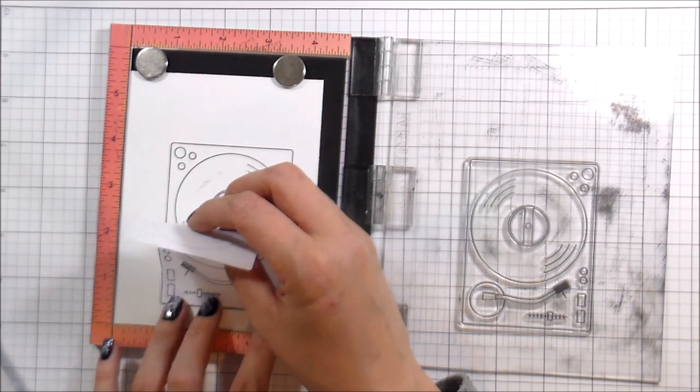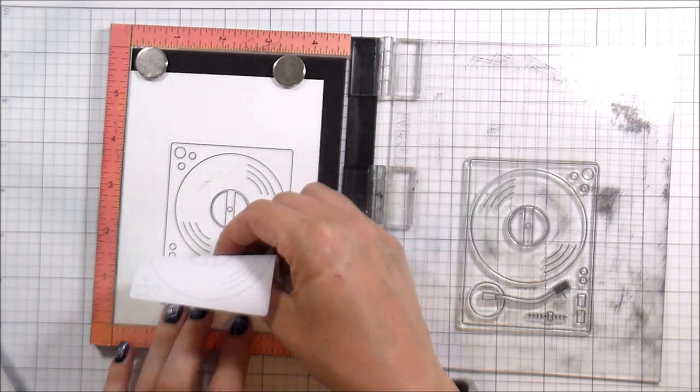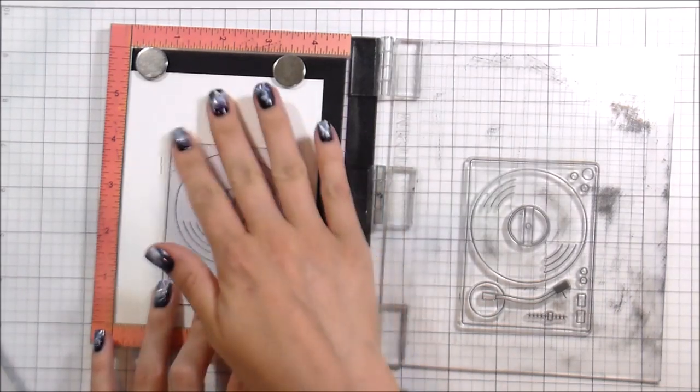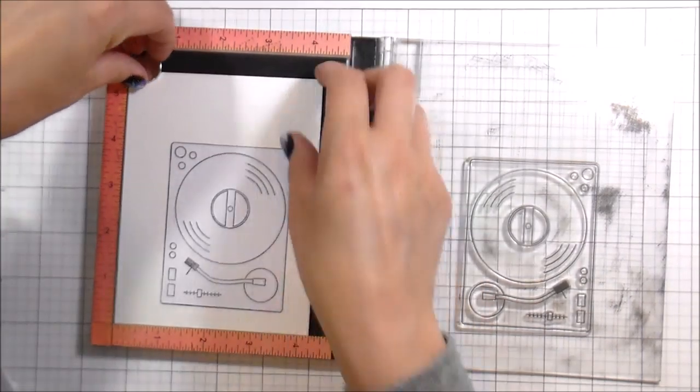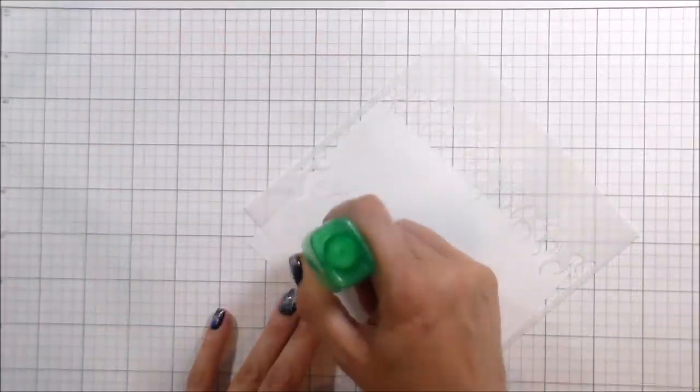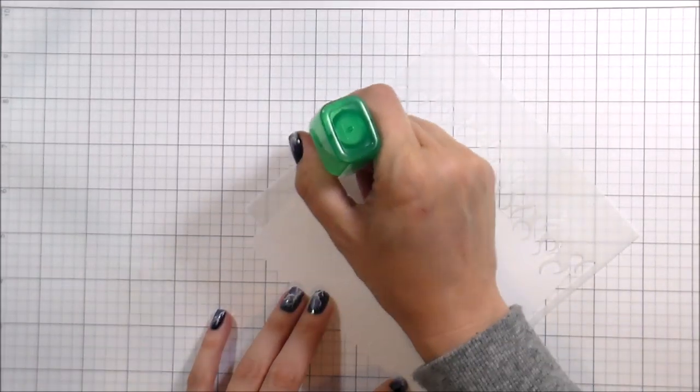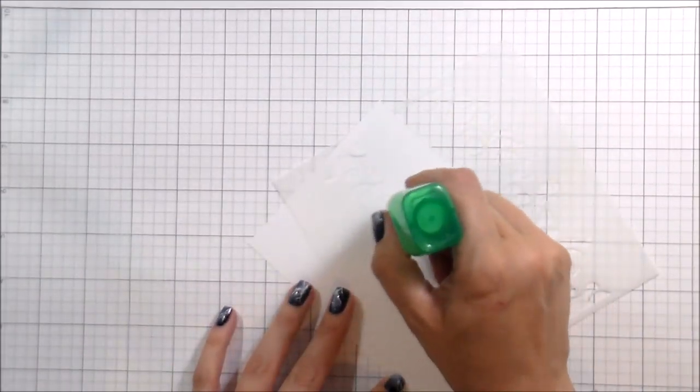So I stamped it twice, then I'm going to go ahead and mask it. This wouldn't have to be a one-layer card at all, by no means, but that's just what I enjoy doing. So from there, once that's stamped down, I masked that off.